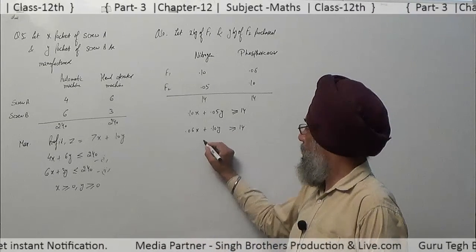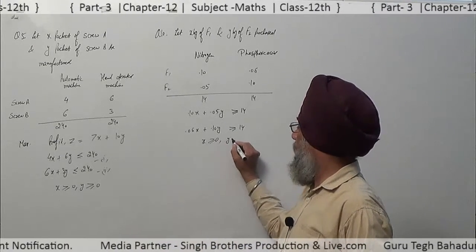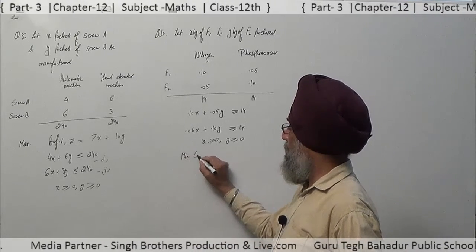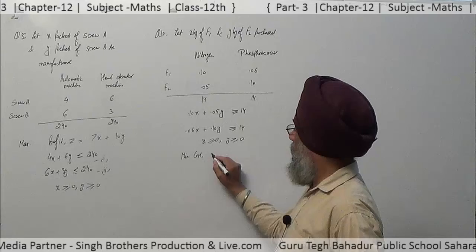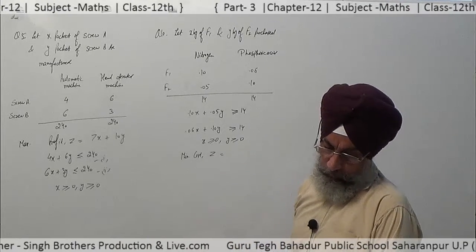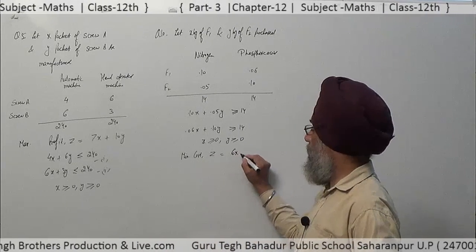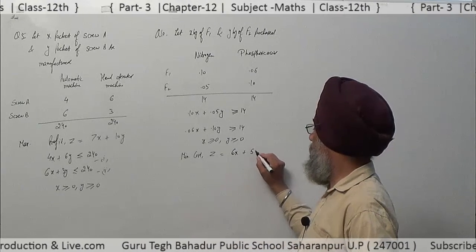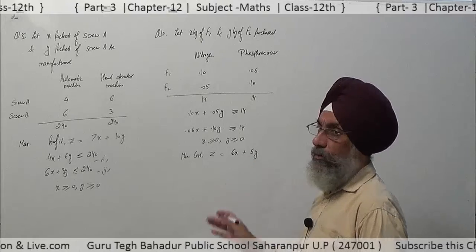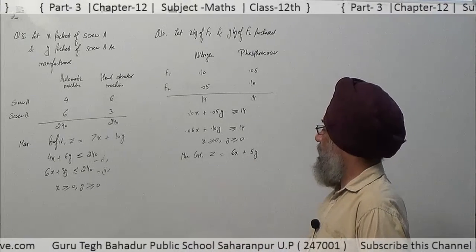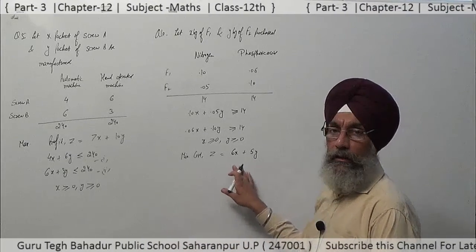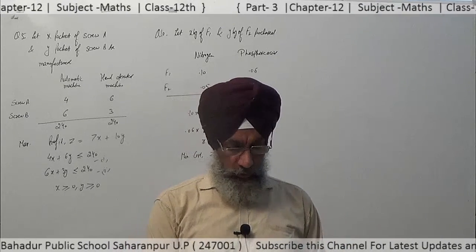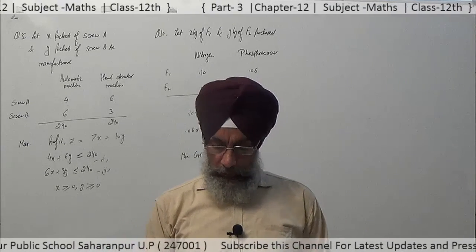Also, x ≥ 0 and y ≥ 0. Since we are dealing with cost, we minimize it. Minimize z = 6x + 5y. Solve the equations, find the values of x and y from the feasible region, and determine where the cost is minimum. These are all the questions of exercise 12.2 — try them all.